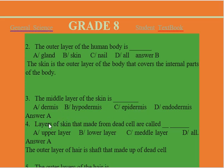The layer of the skin that is made from dead cells is called: A. upper layer, B. lower layers, C. middle layers, D. whole. The layer of the skin made of dead cells is the upper layer.